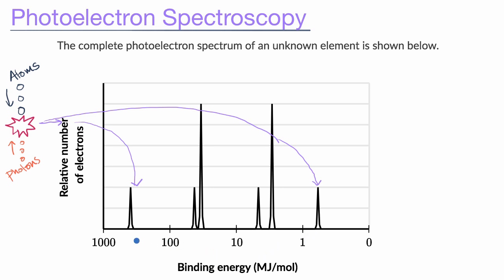And so one way to view the photoelectron spectrum is it gives you a sense of roughly how many electrons have various binding energies. And you can see that the binding energy increases as we go to the left. Now the reason why this makes sense, the binding energy is inversely proportional to how much kinetic energy these electrons have as they actually get knocked off.